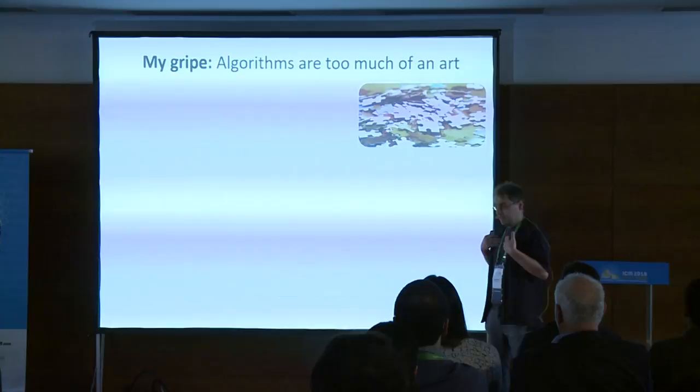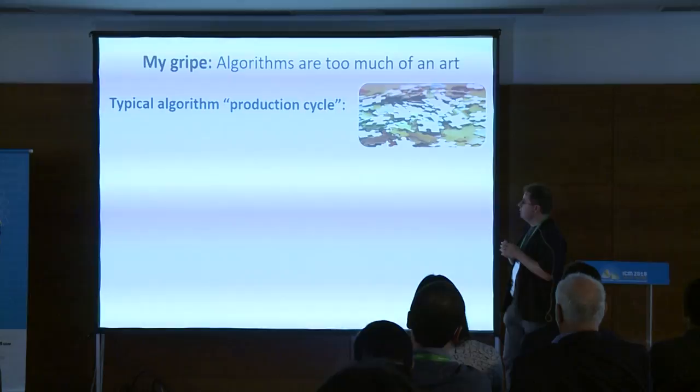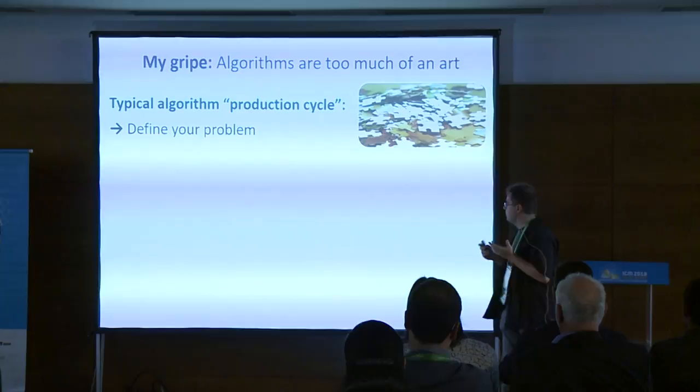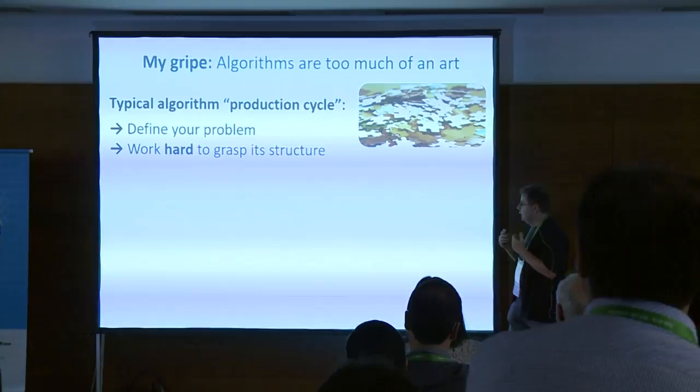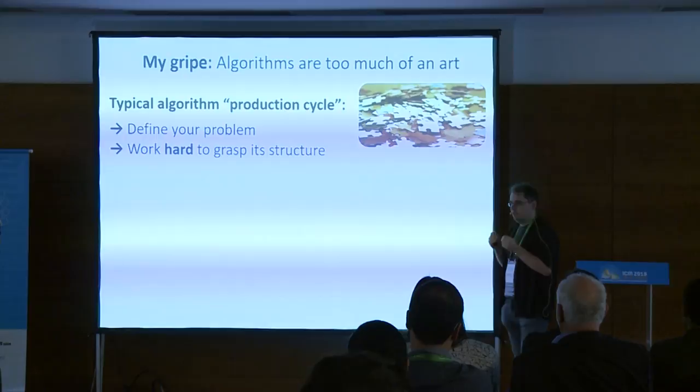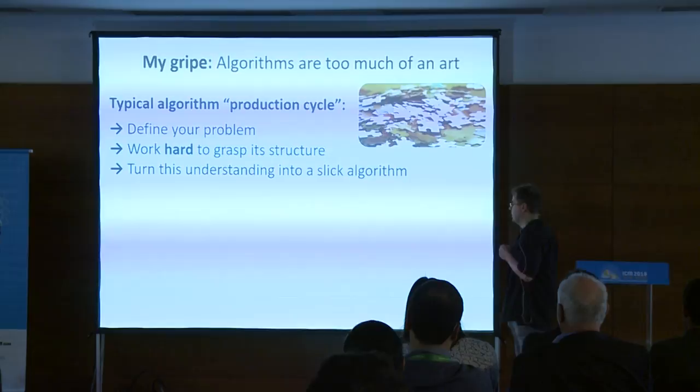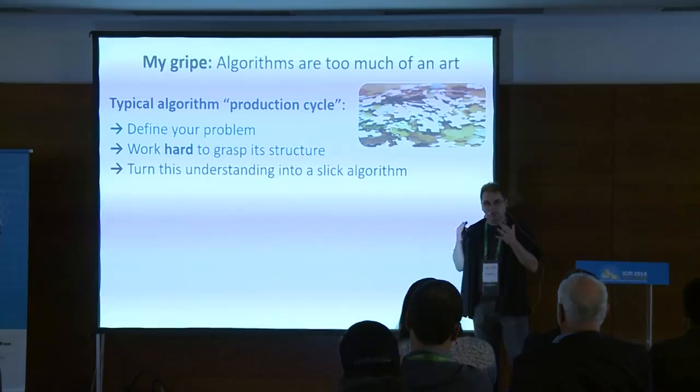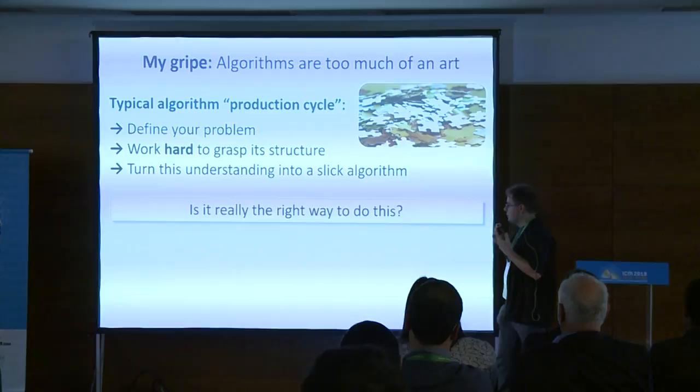Let's look at the typical algorithm production cycle. Whenever you want to solve a problem, you start by formally defining the algorithmic problem you want to solve. Once you define it, you start working hard to understand the structure of this problem — essentially how the definition imposes structure over the objects you want to understand. And then after working hard, you finally realize something and can turn this understanding into an actual nice algorithm. That's how we do algorithms currently.